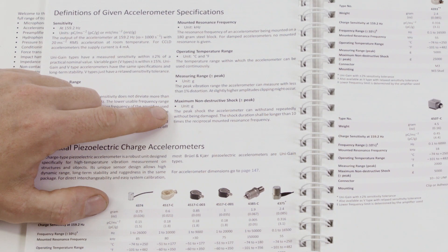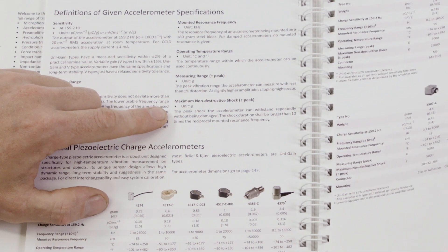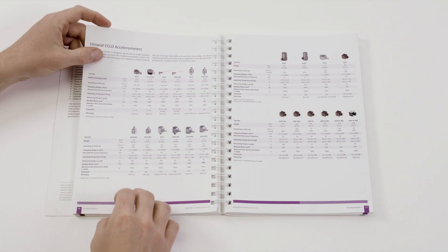The maximum non-destructive shock, on the other hand, states the maximum level that can be incurred on the accelerometer without physical damage.